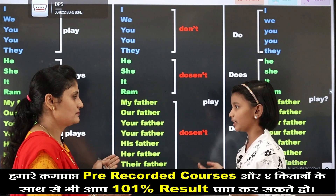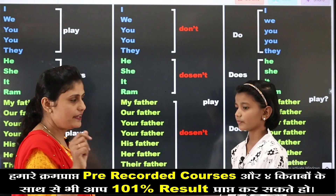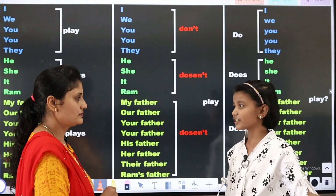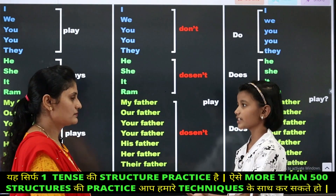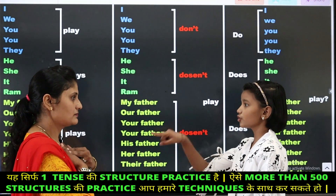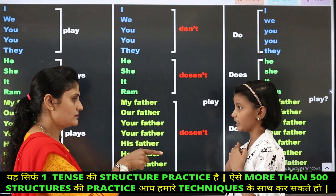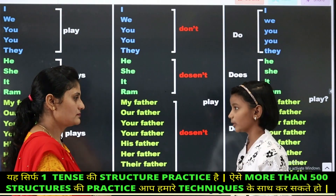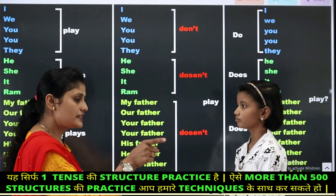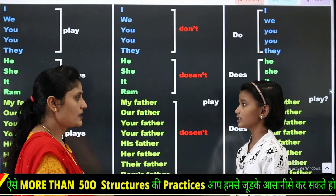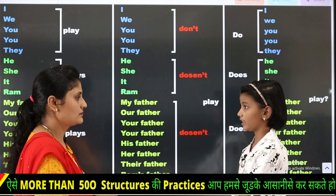Do I play? Yes, we play. Do we play? Yes, we play. Do you play? Yes, we play. Do they play? Yes, they play. Does he play? Yes, he plays. Does she play? Does it play? Yes, it plays. Does Ram play? Yes, Ram plays. Does Shyam play? Does my father play? Yes, your father plays. Does our father play? Yes, our father plays. Does your father play? Yes, my father plays. Does his father play? Yes, his father plays. Does her father play? Yes, her father plays. Does their father play? Yes, their father plays. Does Ram's father play? Yes, Ram's father plays. Does Shyam's father play? Yes, Shyam's father plays.